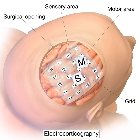The ECoG recording is performed from electrodes placed on the exposed cortex. In order to access the cortex, a surgeon must first perform a craniotomy, removing a part of the skull to expose the brain surface. This procedure may be performed either under general anesthesia or under local anesthesia if patient interaction is required for functional cortical mapping. Electrodes are then surgically implanted on the surface of the cortex, with placement guided by the results of preoperative EEG and magnetic resonance imaging.